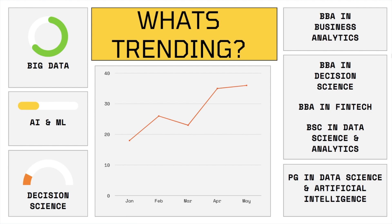What is trending these days? I'm pretty sure many of you finishing class 12th have been hearing words like big data, artificial intelligence, machine learning, decision science — or courses like PB in Decision Science, BBA in Business Analytics, BBA in Fintech, Data Science and Analytics, or Data Science and Artificial Intelligence. Yes, these are very trending terms and they look very fancy — you feel like someone's making a lot of money with these things.